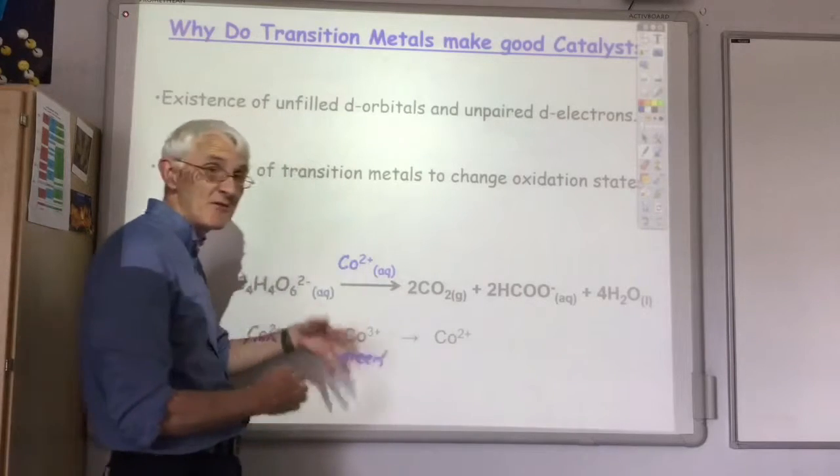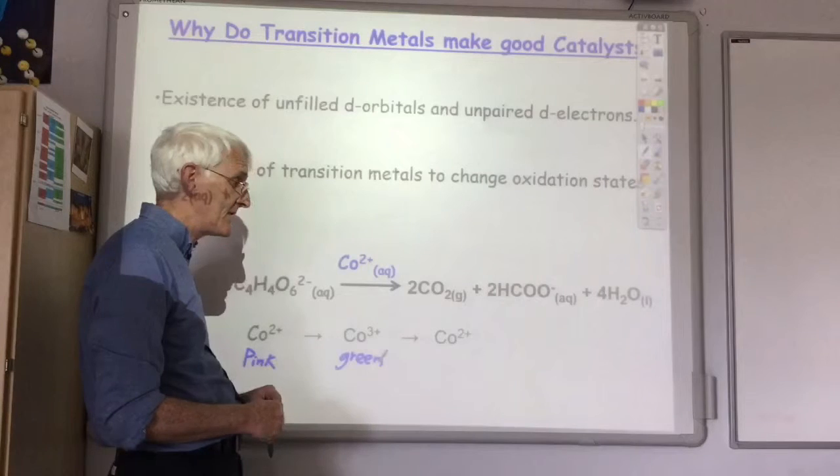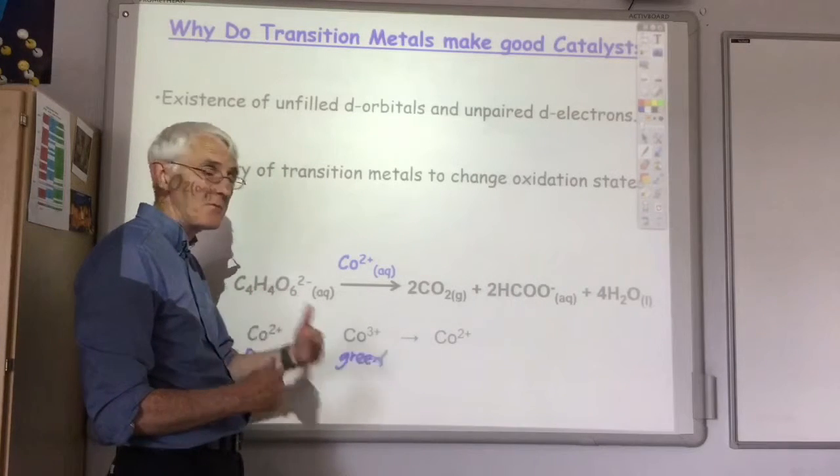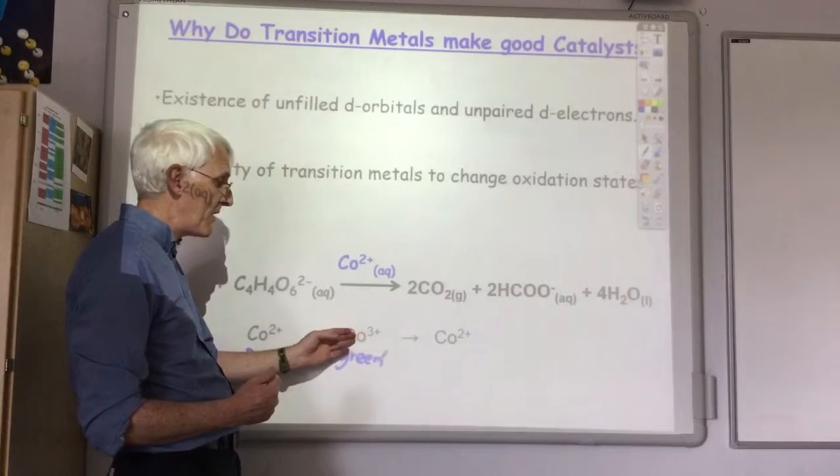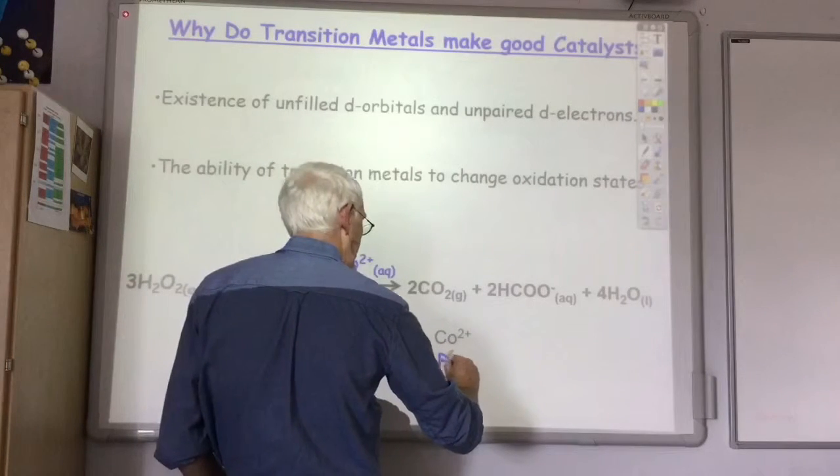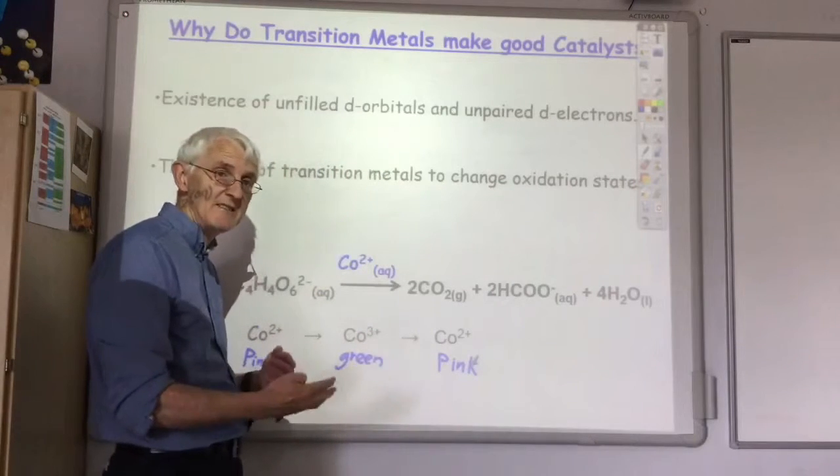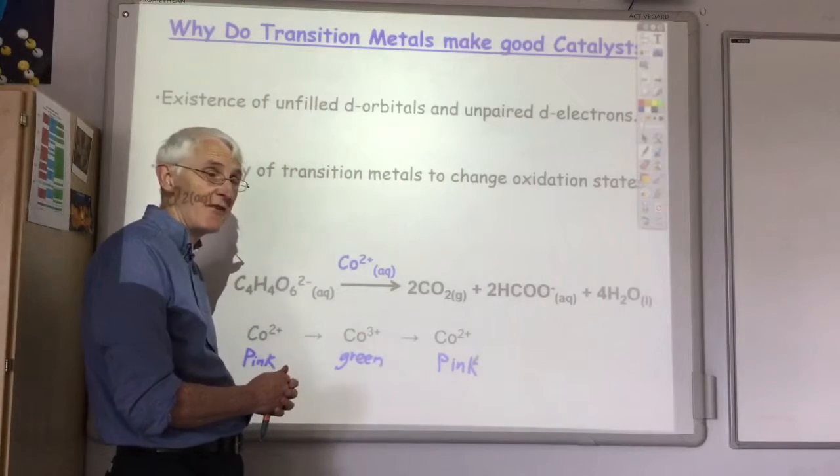At that stage, the reaction goes very fast and you get lots of bubbles of carbon dioxide gas produced. But as the reaction comes to an end, the Cobalt 3+ is reduced back to the pink Cobalt 2+, fulfilling the criteria that the catalyst always remains unchanged at the end of the reaction.